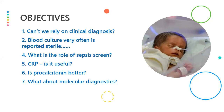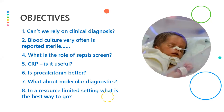What about procalcitonin — is it better than CRP? What about molecular diagnostic methods? And in a resource-limited setting such as India, which would be the best way to go? I would try to answer each one of these questions.